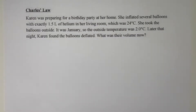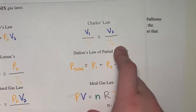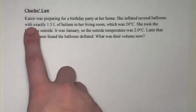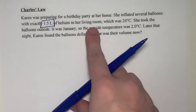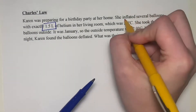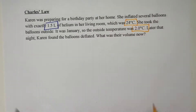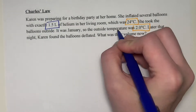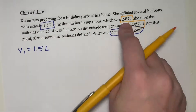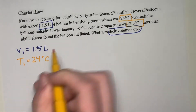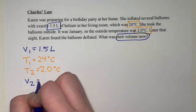So now we're going to be doing Charles' law. Charles' law deals with volume and temperature, so we have the equation V1 over T1 equals V2 over T2. Karen was preparing for a birthday party at her home. She inflated several balloons with exactly 1.5 liters of helium in her living room, which was 24 degrees Celsius. She took the balloons outside — it was January, so the outside temperature was 2.0 degrees Celsius. Later that night, Karen found the balloons deflated. What was their volume now? We're solving for V2. So V1 equals 1.5 liters, T1 equals 24 degrees Celsius, and T2 equals 2.0 degrees Celsius.